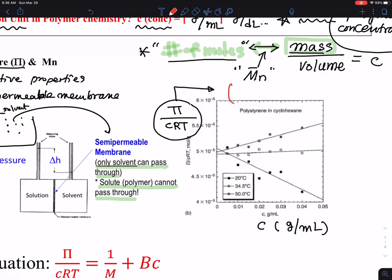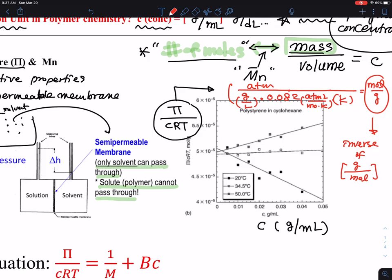Pi is in ATM. Concentration is, let's say, gram per liter. So I want to change that into a unit. You are going to use 0.082 ATM liter mol kelvin. Then you are using the temperature unit of kelvin. So it all kind of cancels out. You end up getting mol per gram. This one looks like inverse of gram per mole. So whatever you find out over here, this one is actually 1 over molecular weight. For this kind of plot, using x-axis as concentration, y-axis pi over CRT.